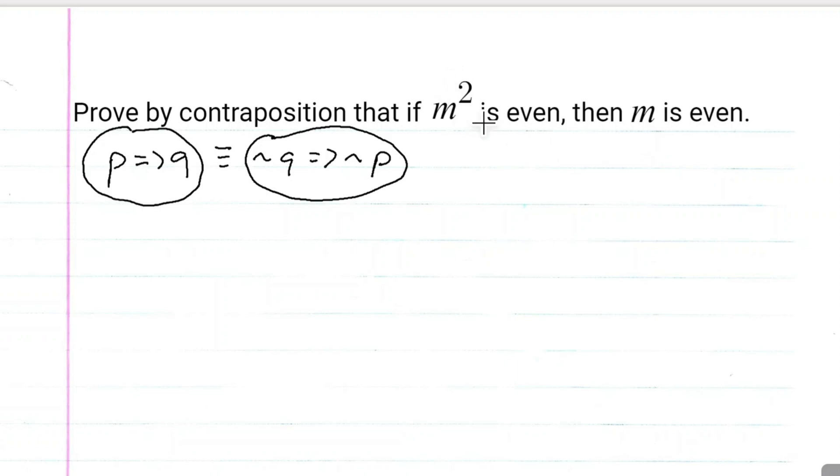If we can prove that statement is true, then it's the same thing as saying if m squared is even, then m is even, which is what we want. So if we can show that if m is odd, then m squared is odd, then we know that the statement if m squared is even, then m is even is true.